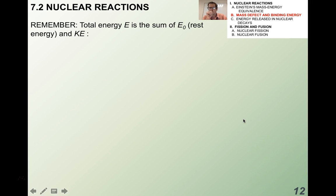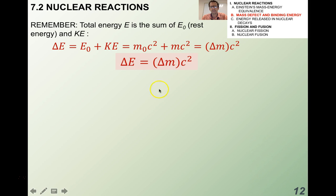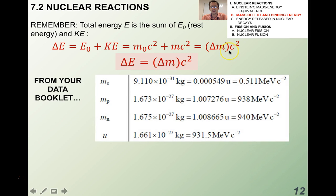Remember that the total energy is the sum of the rest energy and the kinetic energy. We said that E equals E-naught plus KE, which is M-naught C squared plus MC squared. If I combine the C squared terms, I have that delta E equals delta M times C squared. This is the version of Einstein's mass-energy equivalence that you see in your data booklet, showing the change in energy and change in mass.